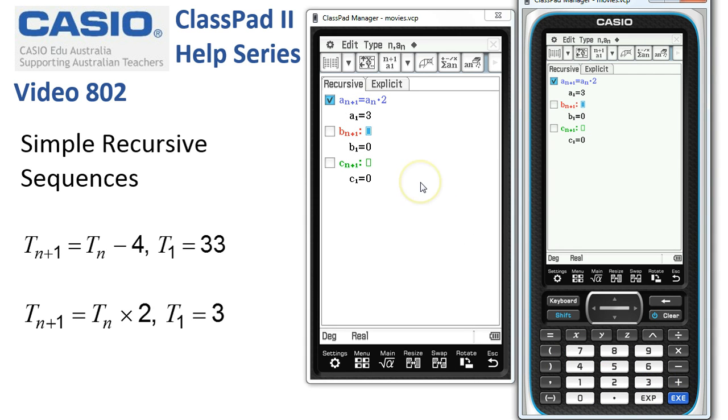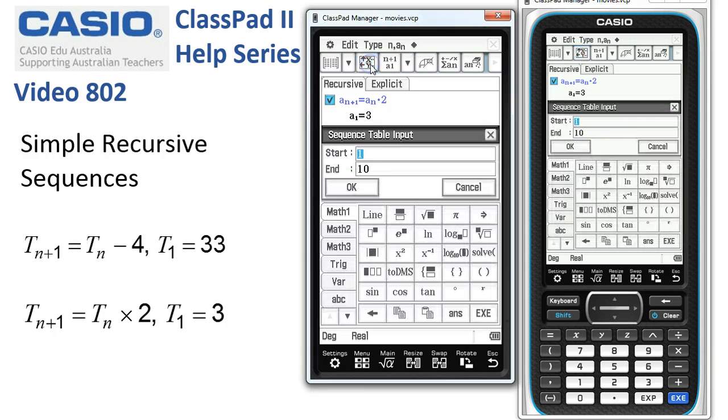This time we're after the first eleven terms. So we'll set up our table window from one to eleven and tap OK.